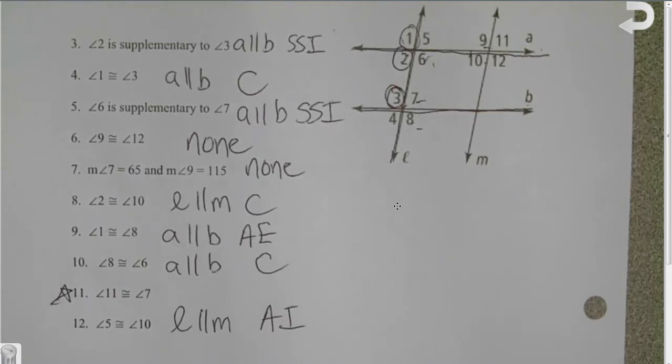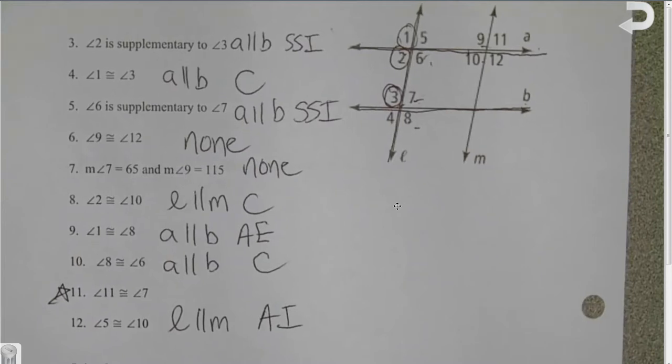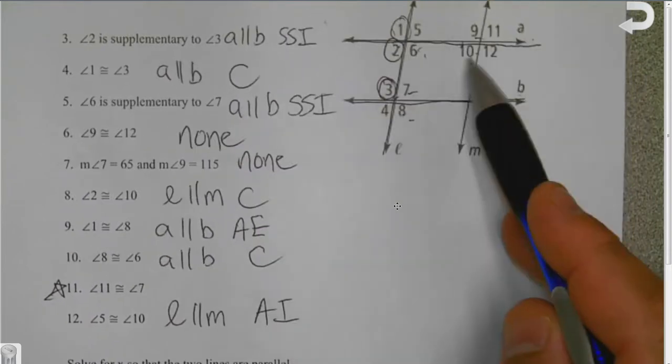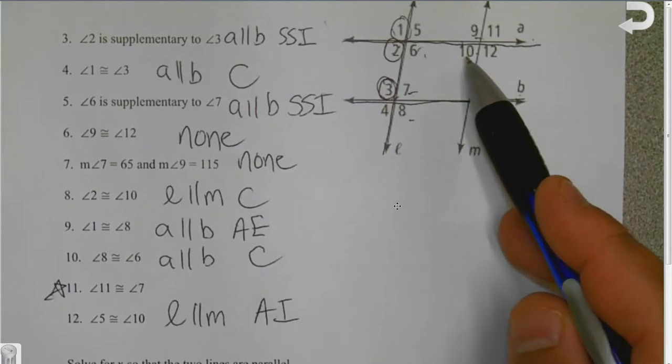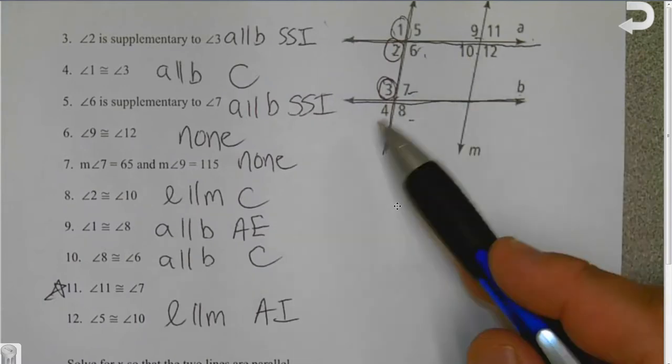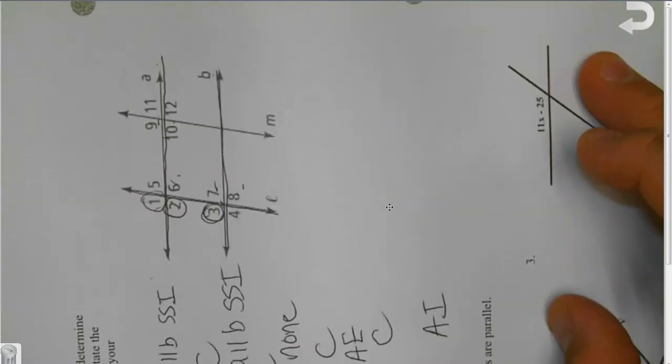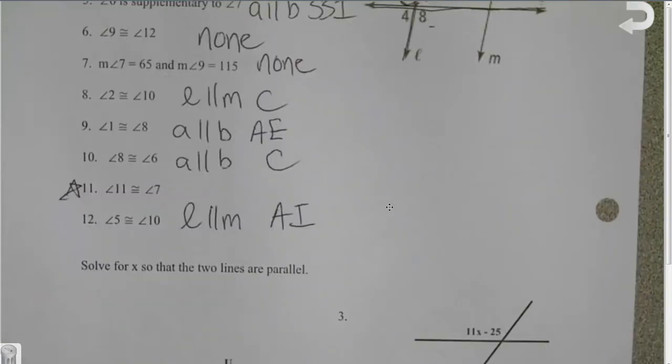12, L is parallel to M because 5 and 10 are alternating interior. Now I know you're like, wait a minute. 5 is exterior. But not when we turn it this way. 5 and 10 are both inside the parallel lines L and M.